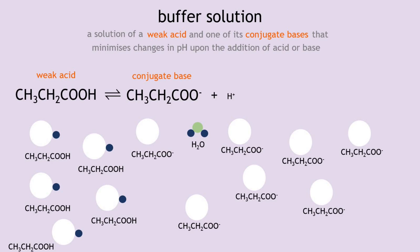In the second case, the hydroxide ions react directly with the weak acid — the propanoic acid — in a neutralization reaction, forming propanoate ions and water. We no longer have any hydroxide ions, so in this way we've resisted an increase in pH. Originally, adding the hydroxide ions would have increased their concentration and raised the pH, but instead a neutralization reaction occurred thanks to the propanoic acid. Both propanoate ions and water do not affect the pH at all.